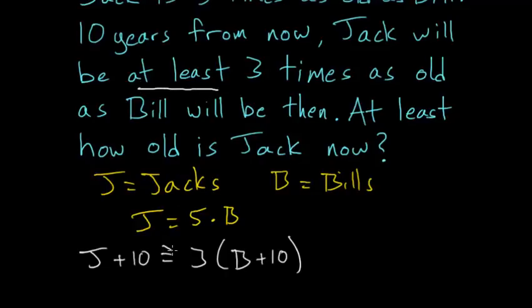So this is really an inequality. So we have greater than or equal to. And the question asks at least how old is Jack now? So we're trying to find out Jack's age.